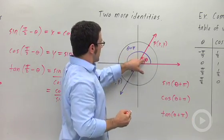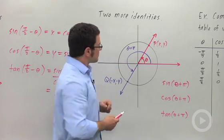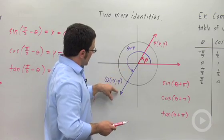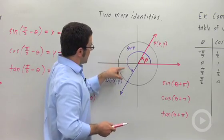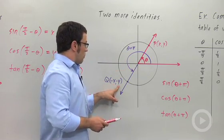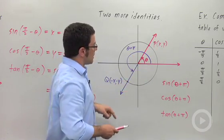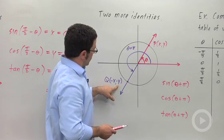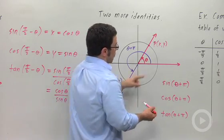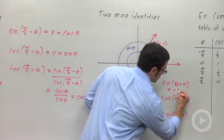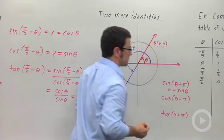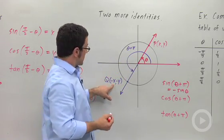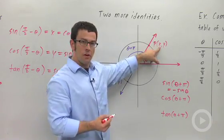I've drawn theta and theta plus pi on the unit circle. The coordinates of point Q, which is on the terminating side of theta plus pi, are negative x, negative y, where x and y are the coordinates of point P. So the sine of theta plus pi is going to be negative y, and negative y is the opposite of the sine of theta. The cosine of theta plus pi is going to be negative x, and negative x is the opposite of the cosine of theta.